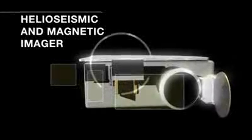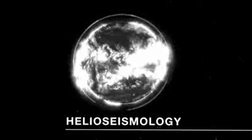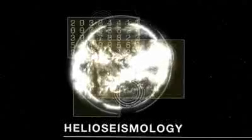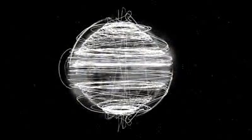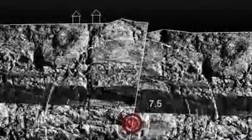HMI is the Helioseismic and Magnetic Imager — very long words for something that's very useful to look at on the sun. The helioseismic refers to the sound waves that we can measure at the surface of the sun, that when we carefully analyze them, we can look inside the sun and see what's happening under the surface and even on the other side. It's much like how we use the waves from earthquakes to know where the earthquake happened, how big it was, and to learn about what's inside the Earth.